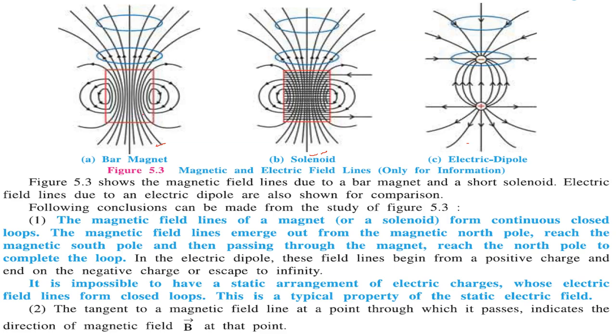The magnetic field lines of a magnet or solenoid form continuous closed loops. The magnetic field lines emerge out from the magnetic north pole, reach the magnetic south pole, and then again pass through the magnet and reach the north pole to complete the loop.